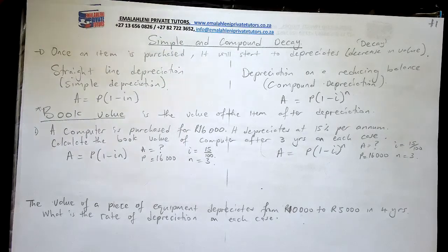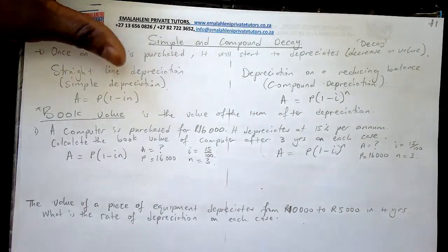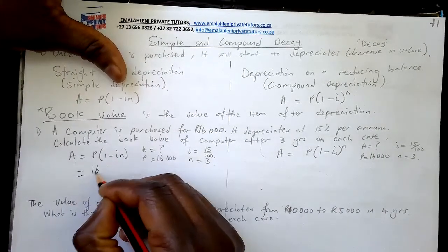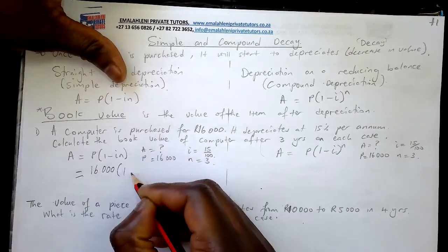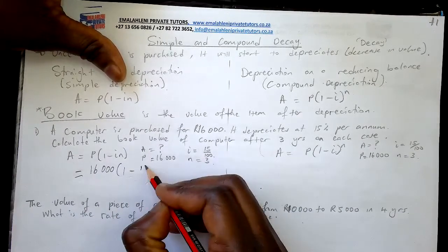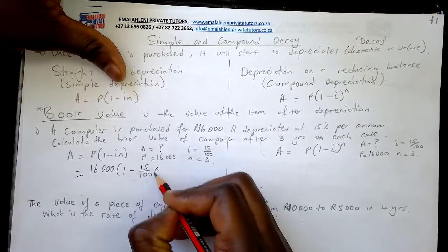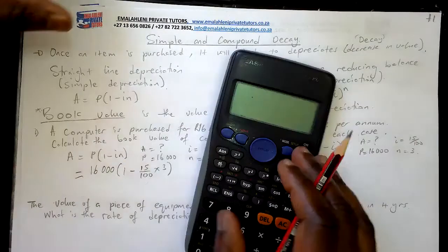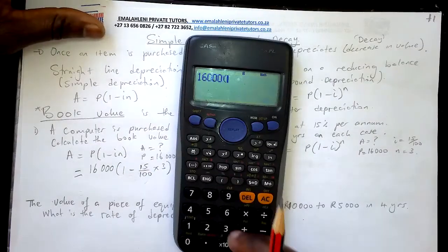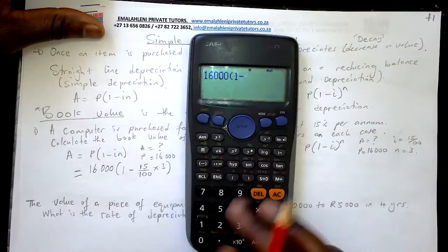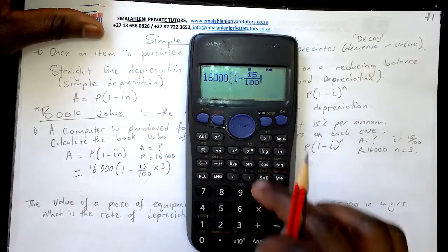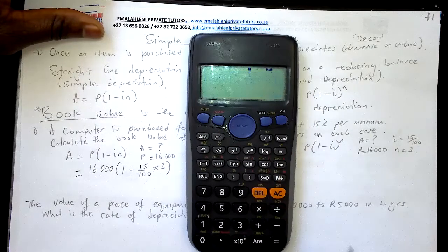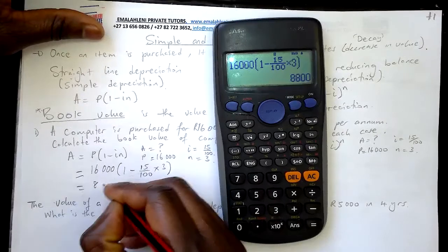We are given P = 15,000 (note: the problem states 16,000 but let's use what's given), i = 15/100, and n = 3. Substituting into A = P(1 - in): A = 15,000 × (1 - 15/100 × 3). Putting this into the calculator gives us 8,800.